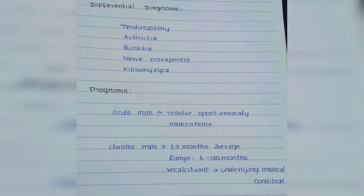Differential diagnosis includes tendinopathy, arthritis, bursitis, nerve entrapment, and fibromyalgia. Regarding prognosis, acute MPS resolves spontaneously with medications, whereas chronic MPS may last up to 63 months on average, with a common range of 6 to 180 months. It can also be recalcitrant when there is an underlying active medical condition.